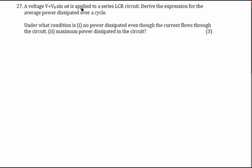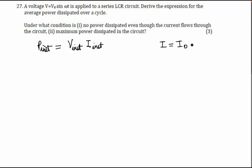This is a scoring question from AC circuits where the voltage is V = V0 sin(ωt). The instantaneous power is the instantaneous voltage into the instantaneous current. The instantaneous current is I = I0 sin(ωt + φ), where we are assuming current is ahead of the voltage by a phase difference of φ.